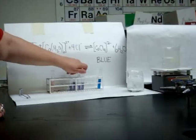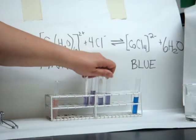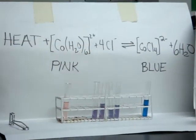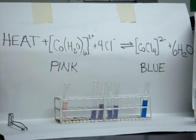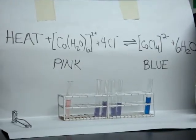Now in the middle here I have four test tubes that are sort of right at equilibrium. They're purple so they're halfway between, and I'm going to add a stress and I want you guys to predict what's going to happen. Will it shift to the left and be pink or will it shift to the right and be blue?